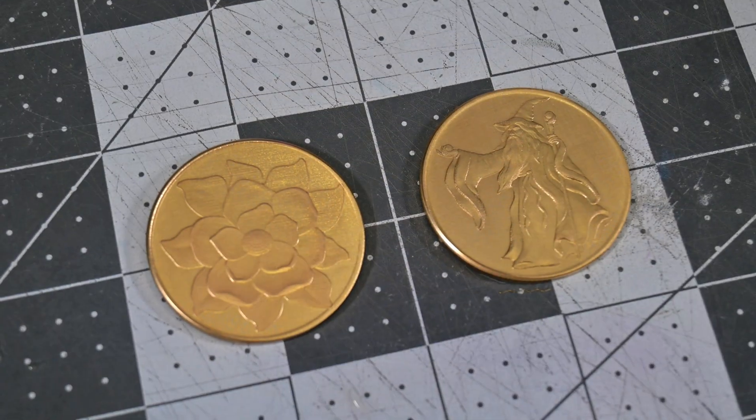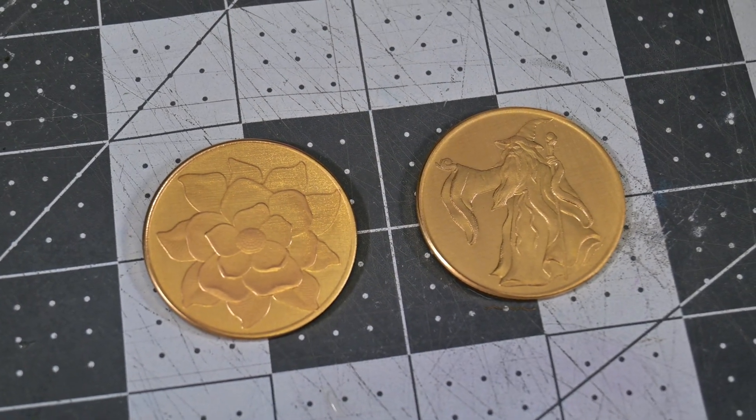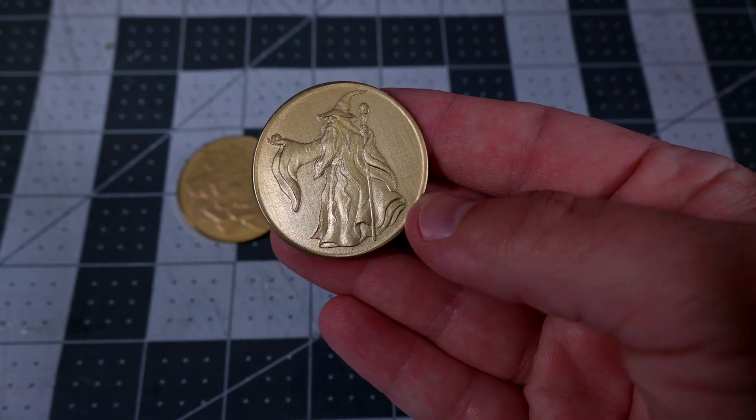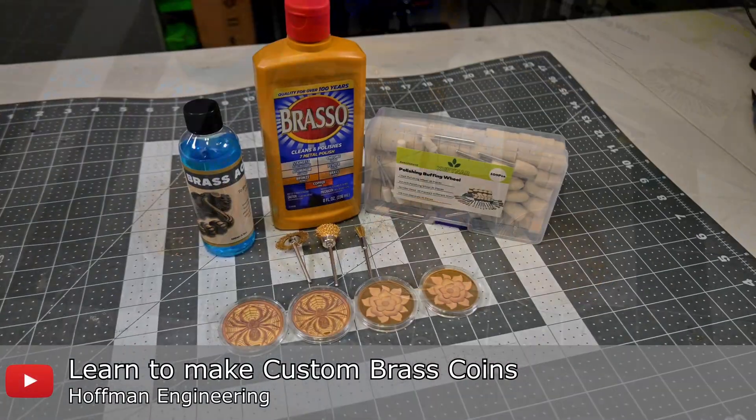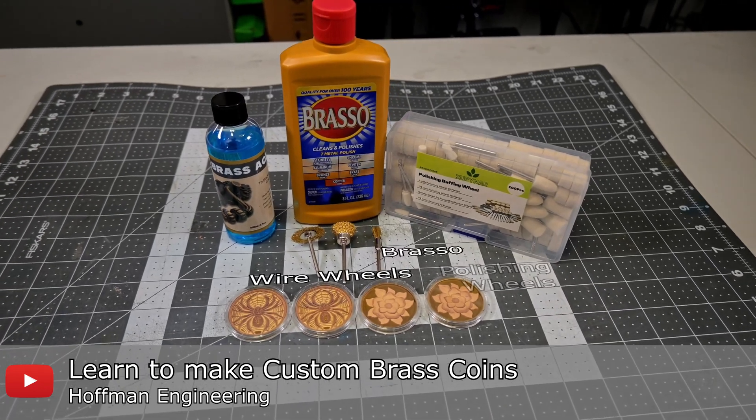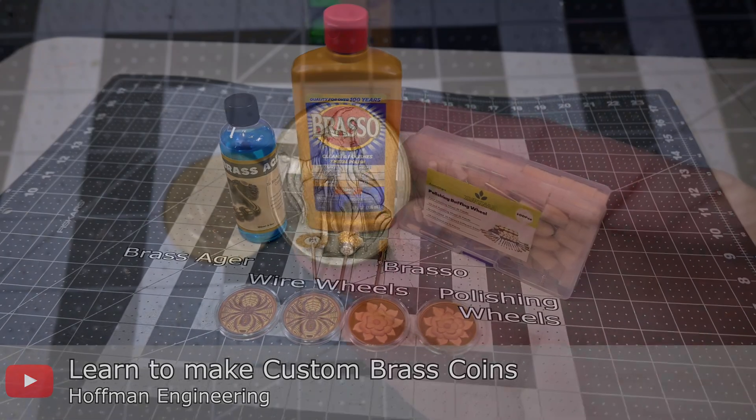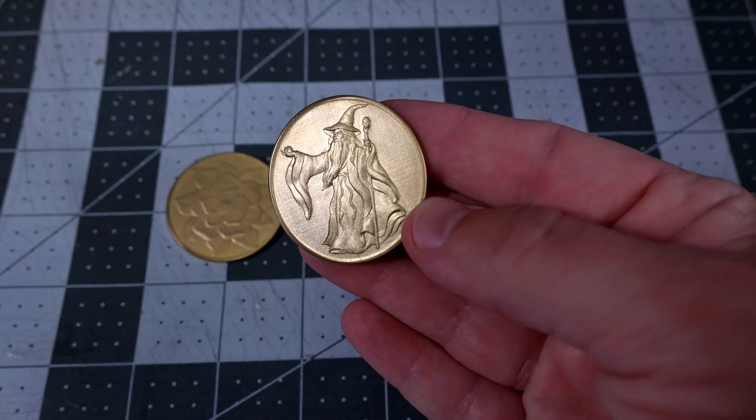Speaking of deep engravings, these custom brass coins turned out amazing. I was able to engrave about 1.5mm deep in about an hour and a half. If you want more details about how I engrave and finish custom brass coins, you can check out my recent video showcasing my process here. The F1 Pro did a great job for a 20W fiber laser.